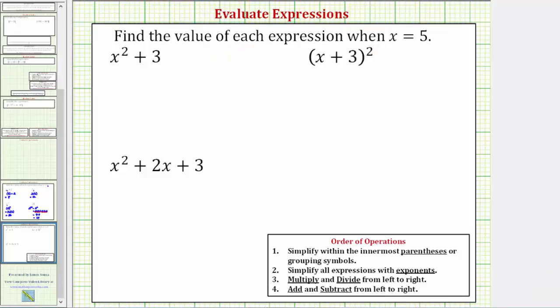We're asked to find the value of each expression when x equals five. To do this, we substitute five for x in each expression, and then simplify each expression using the order of operations.